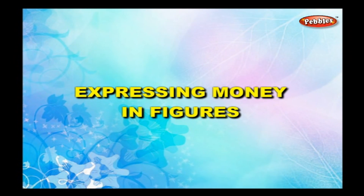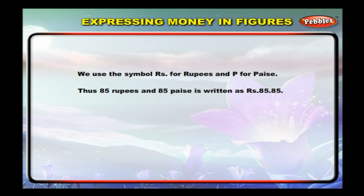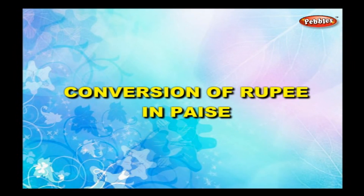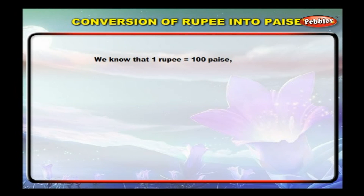Expressing money in figures: we use the symbol Rs for rupees and p for paisa. Thus, 85 rupees and 85 paisa is written as Rs. 85.85. When paisa has to be written separately, we write it as 0.85, where 0 denotes that there is no rupee.